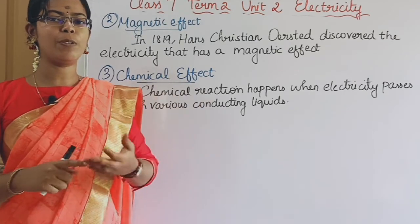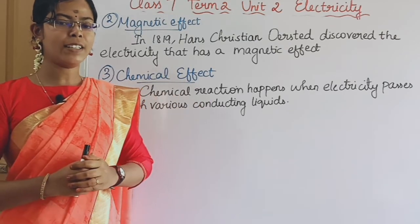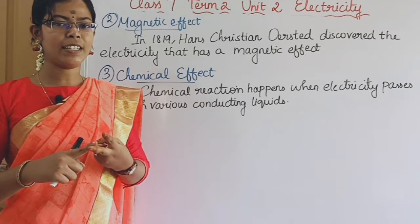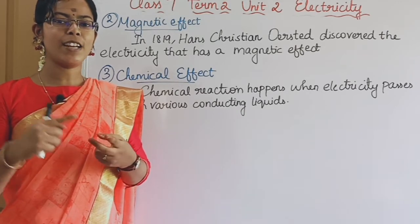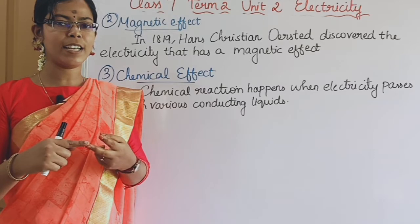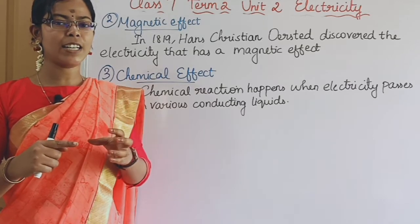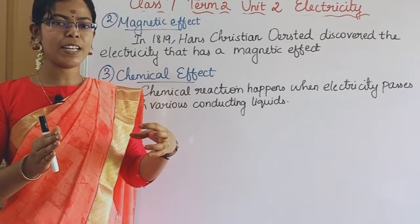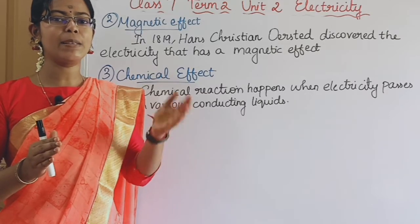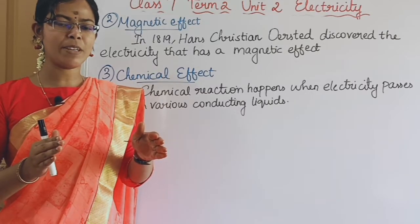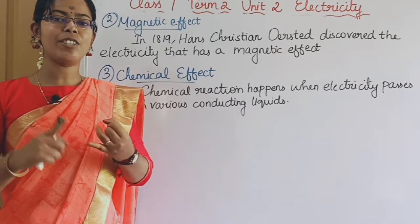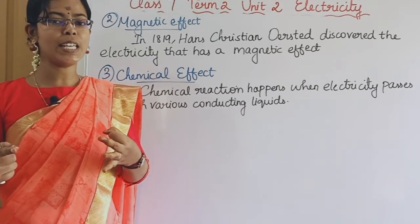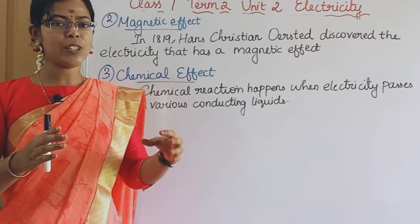I hope this video will be useful to you. In this electricity chapter, we cover topics such as conventional current, electric current, potential difference, resistance, electrical resistivity, electrical conductivity, types of cells — primary cells and secondary cells — simple dry cells, batteries, electric circuits, parallel circuits, series circuits, and insulators.